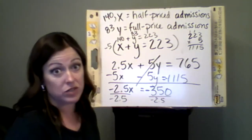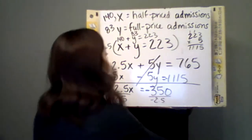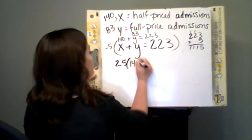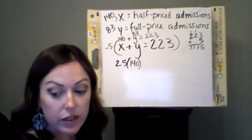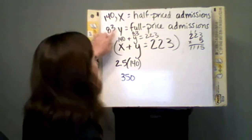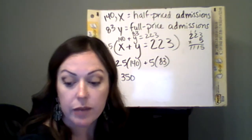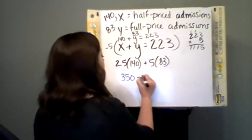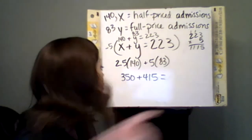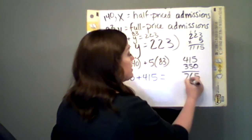So let's double-check that that actually pencils out correctly. I know it works for the first equation, the x plus y equals 223, but let's make sure that those admissions values also pencil out correctly. I know that I have at $2.50 for 140 people, because that was x, so 140 times 2.5 equals $350. And then I know that 83 people came at $5 each, because that was the full-price admission. So I go 5 times 83, and 83 times 5 is going to give me 415. Now if we did this correctly, that is going to come up with the 765 total that we had before. If I go 415 plus 350, 5 and 0 is 5, 5 and 1 is 6, 4 and 3 is 7, 765.